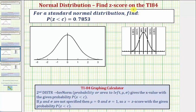Welcome to an example on how to find a z-score on the newer version of the TI-84 for a standard normal distribution, given we know the probability of the z-score is less than a constant c equals 0.7853.